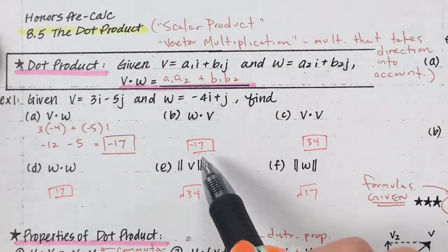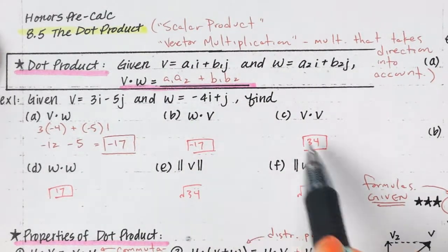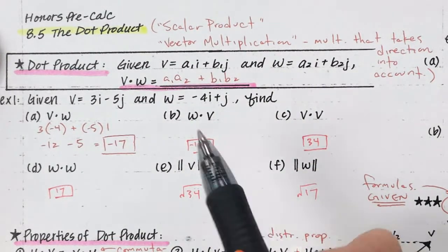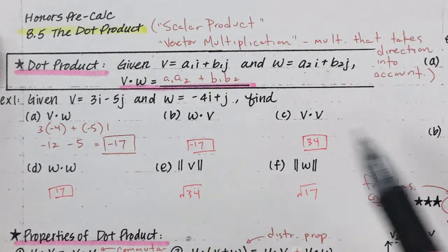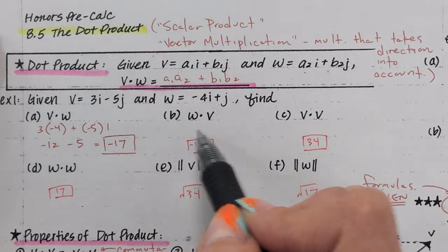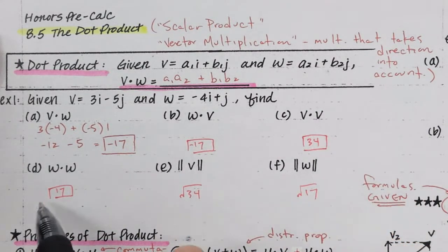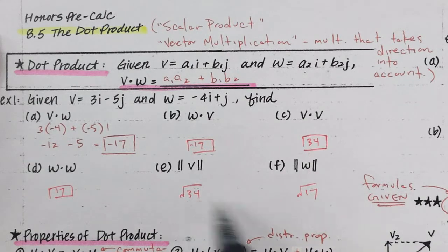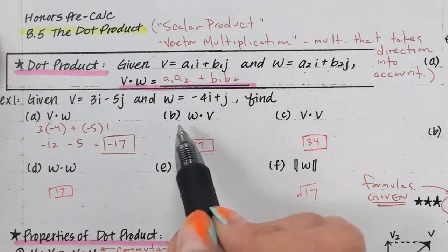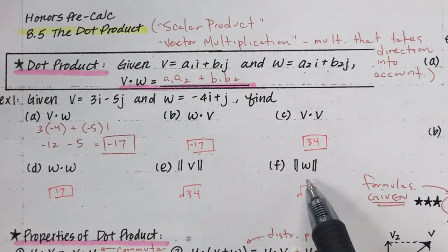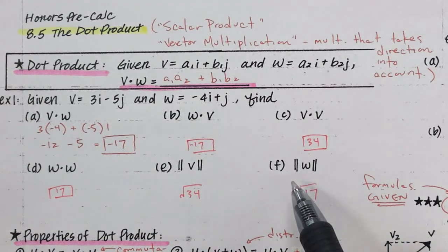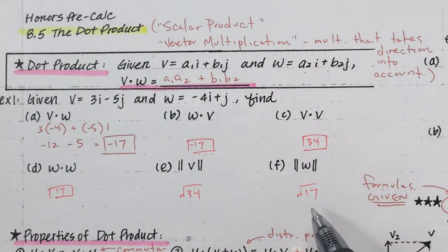I already showed you the answers here, but I want to see work. You're going to work it out, and these are the answers that you should be getting for B through F. So pause and please do that.